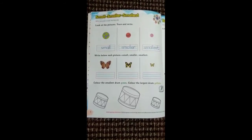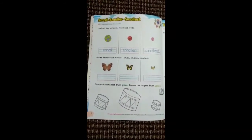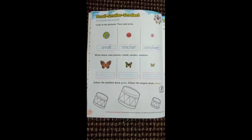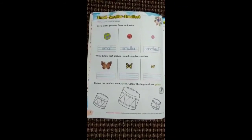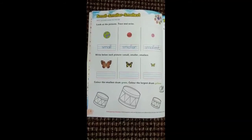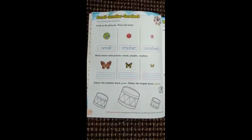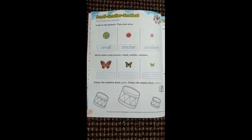Do you know when we compare more than two objects on the basis of their size, we use terms big, bigger, biggest and small, smaller, smallest. When we arrange things from left to right in order of their decreasing size, we use the term for the first most object as small, second object as smaller, and third object as smallest.